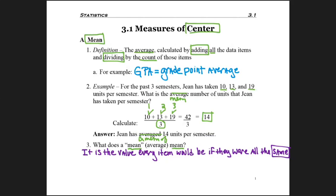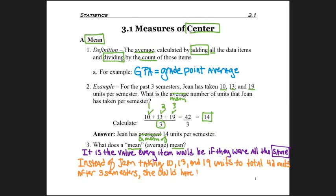So now let's go ahead and think about our case for Gene. Instead of Gene taking 10, 13, and 19 units to total 42 units after three semesters, she would have taken 14, 14, and 14 units each semester. She'd still have 42 total units,